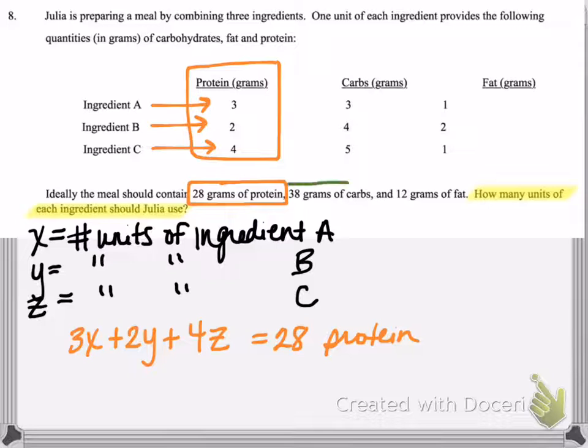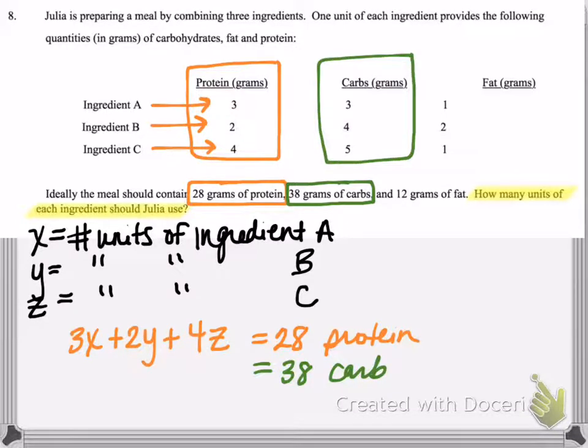Next we see that the meal needs to contain 38 grams of carbohydrates. So we need to create a carbohydrate equation. The carb information is here in the second column: 3 grams, 4 grams, and 5 grams respectively. So the amount of carbs from ingredient A would be 3 times X. The carbs in ingredient B would be 4 times Y, so plus 4Y, and then plus 5Z needs to equal 38.